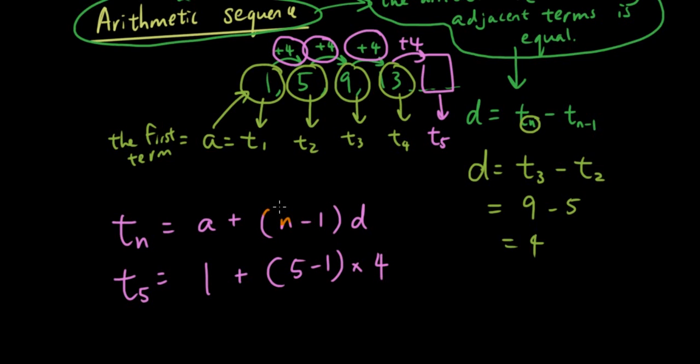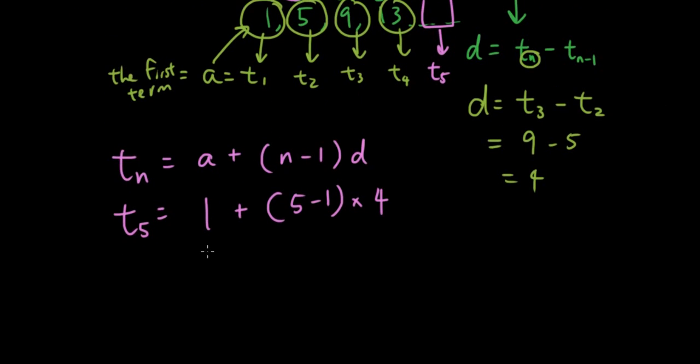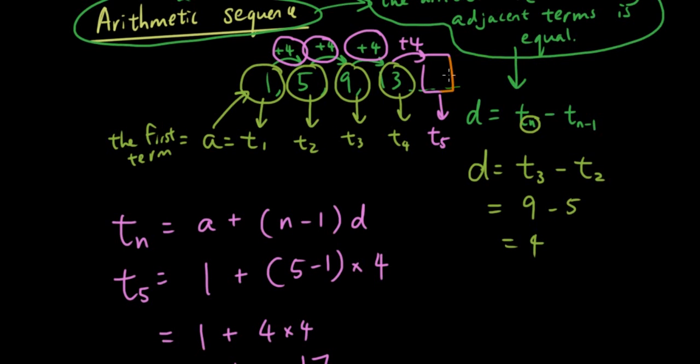Okay, so that's where the N minus 1 comes from. How many times do I add D onto the first term? And it's going to be whichever term that I'm looking for, that number minus 1. That many times we're going to add on D to the first term. So then the answer is going to be 1 plus 4 times 4, which is 1 plus 16, which is 17. So that is indeed T5.